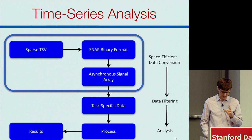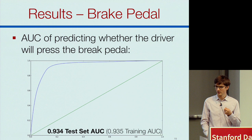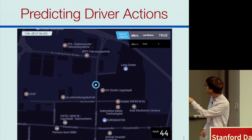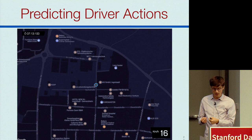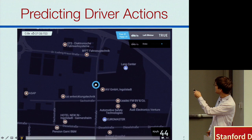For slamming the brake pedal — an extremely rare event — we can detect it quite accurately with an AUC of 0.93. We also have a demo: the system makes predictions in real time about what is about to happen, and then it happens. We predicted the person would turn on the left blinker — they turned it on. We predicted they would press the brake — they did. We can do this with high accuracy.